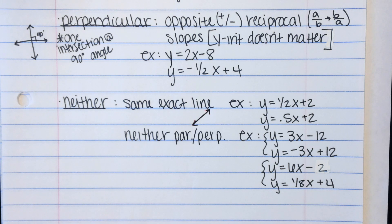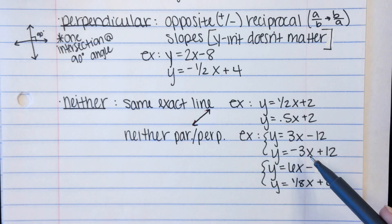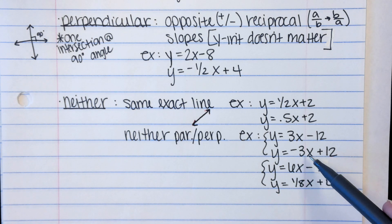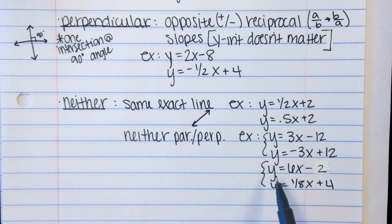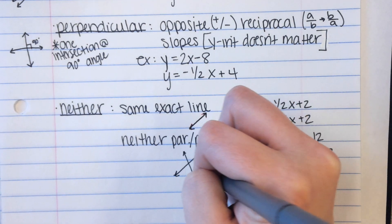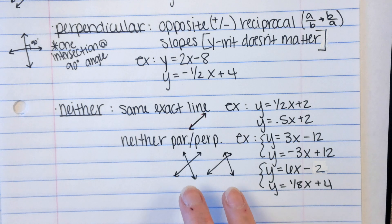The other option or other way you can have neither is if it's not parallel or perpendicular or the same. Okay? It's none of those. So here are some examples. So you have y equals 3x minus 12 and y equals negative 3x plus 12. Their slopes are similar, but are they the same? No. They are opposites, but are they also reciprocals? No. So those are neither. Here's another one. Y equals 6x minus 2. Y equals 1 eighth x plus 4. The slopes are 6 and 1 eighth. Are those the same? No. Are they close to being opposite reciprocals? No. So those are neither. And when you see these on a graph, they're just going to intersect somewhere. They're not going to make a pretty 90 degree angle. They can look lots of different ways, but they're going to intersect at some point on the graph and not at a 90 degree angle.